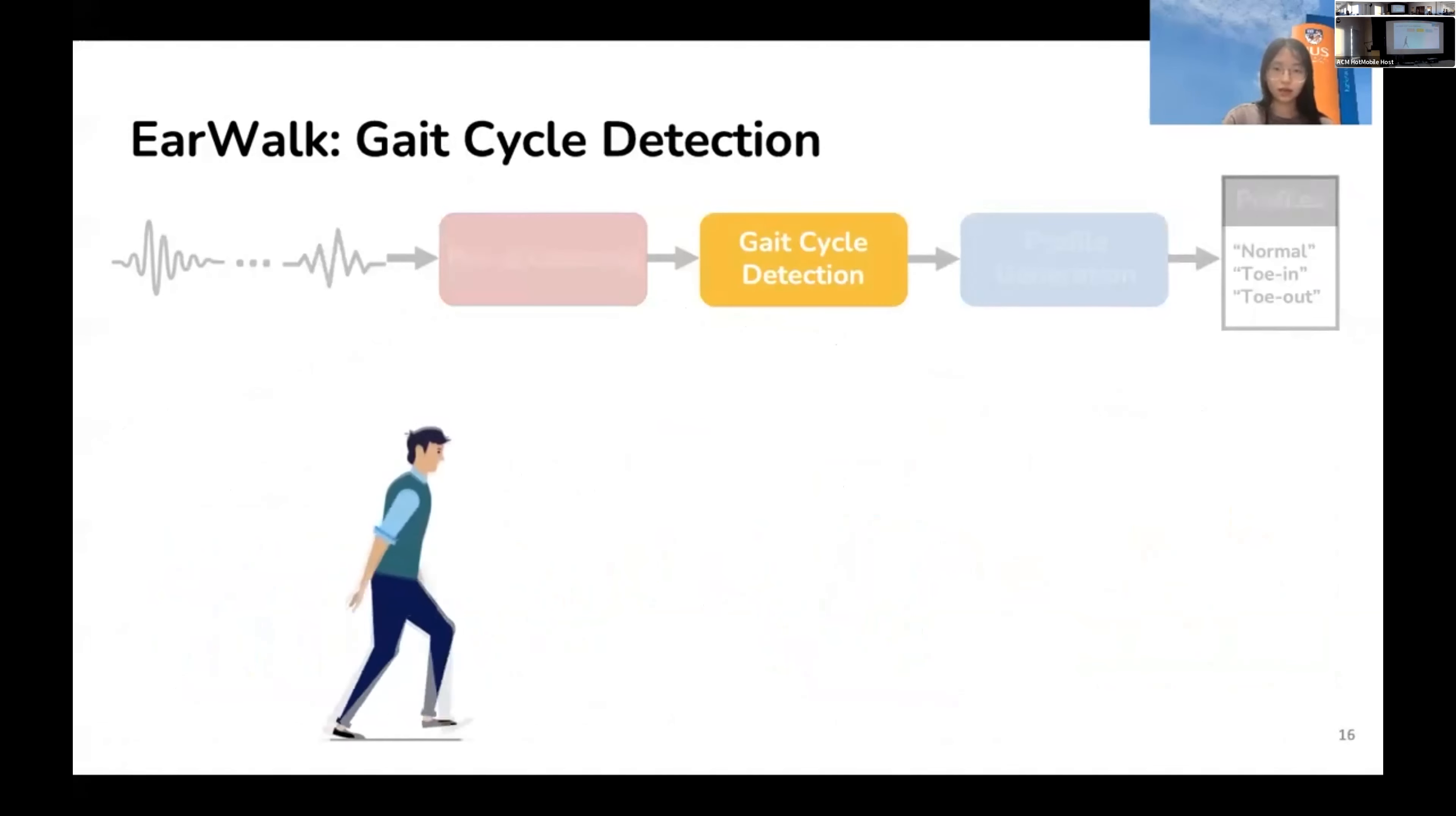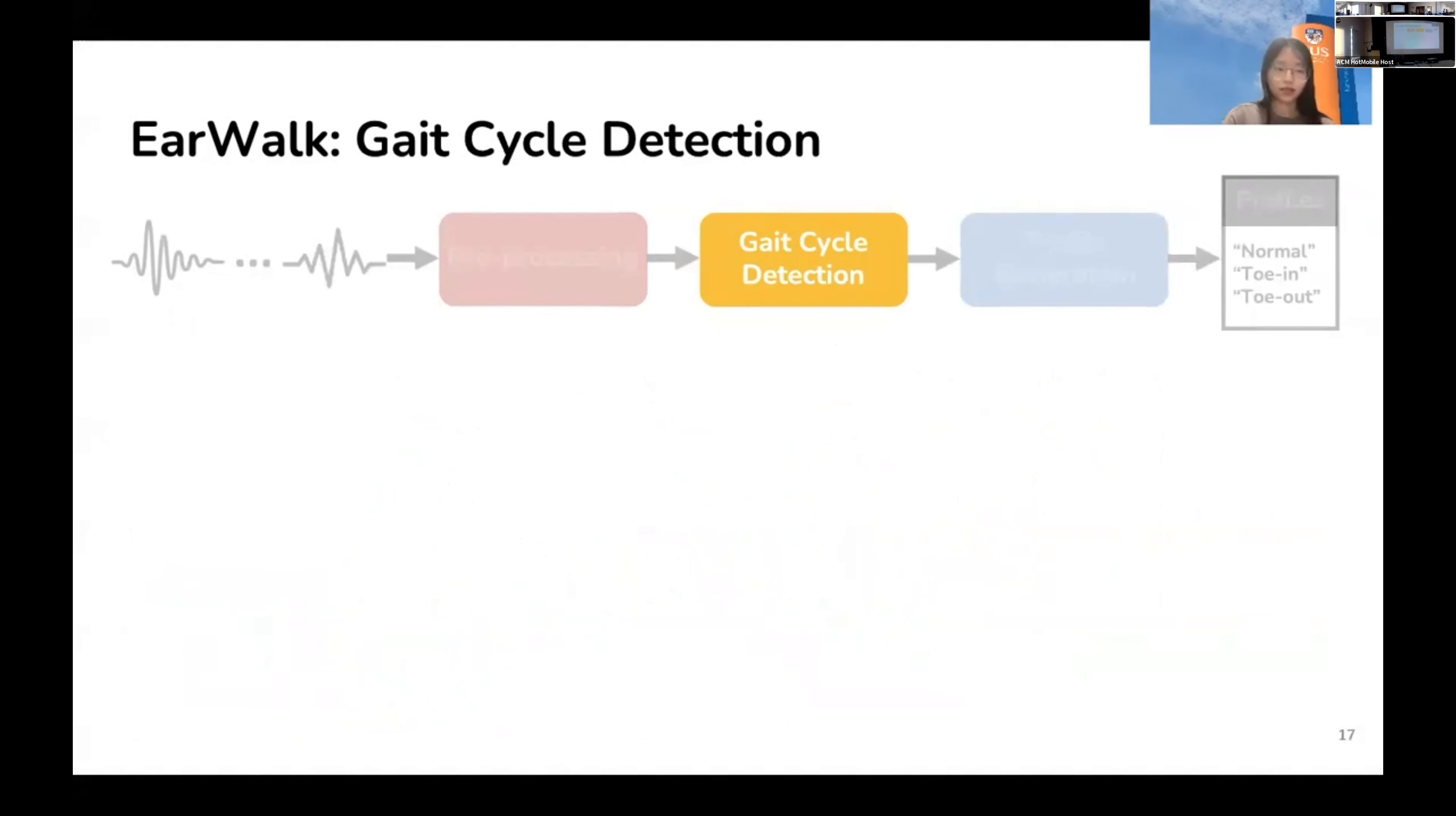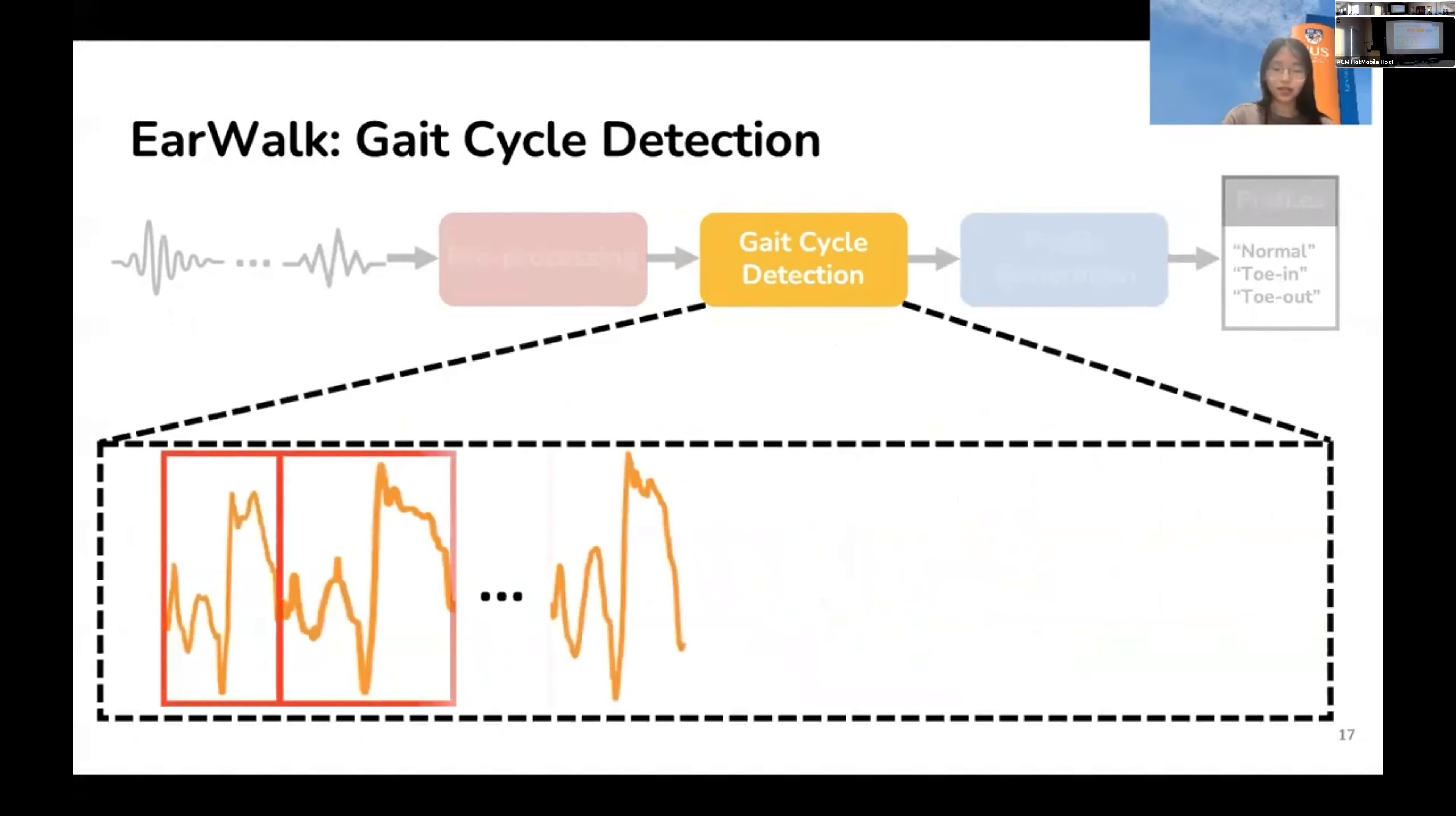We know that walking is composed of multiple repetitive steps. According to our observation, the selected feature also has periodic patterns, which may be corresponding to individual physical steps. So, we designed this gait cycle detection module to detect and crop the weighted average and finally obtain multiple signal cycles from the signal sequence. If you are interested in how we detect the signal cycles, you can read our paper for more information.